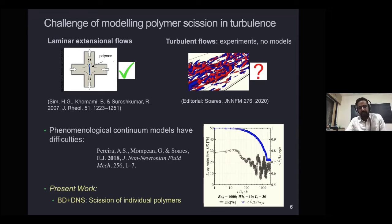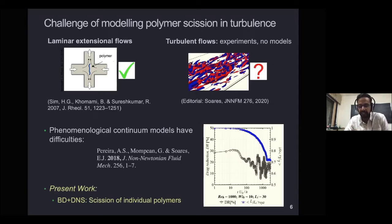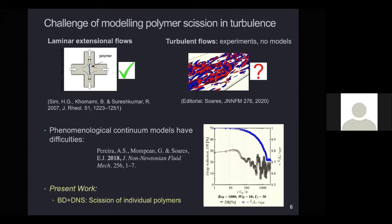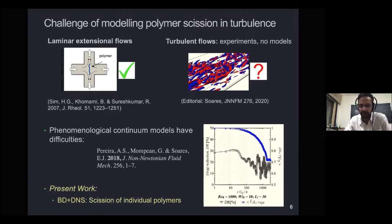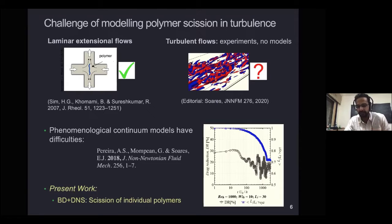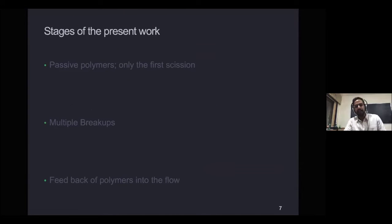There is a real need to understand what's happening at the individual polymer level — how the polymer is breaking up and how this scales with the Deborah number — and from there try to build back up to the continuum scale. Another reason this phenomenological approach may not work is that when a polymer breaks up into smaller lengths, the smaller fragments are harder to stretch — the effective spring stiffness increases. What we want to do is combine Brownian dynamics simulations for individual polymer molecules with DNS for the flow, and use that to understand how scission proceeds at the individual molecule scale.